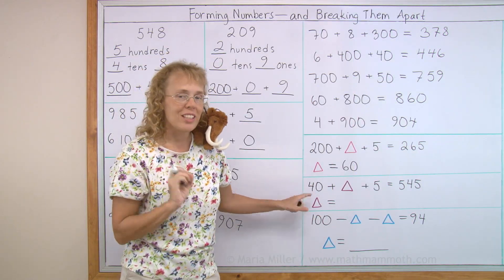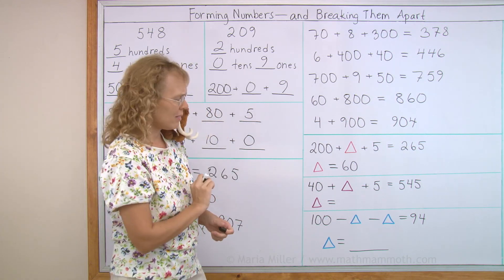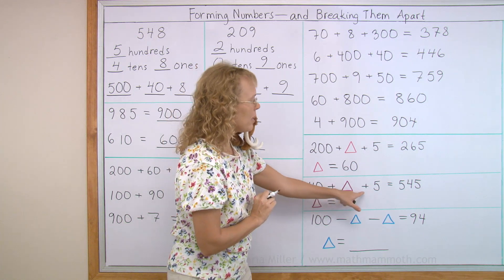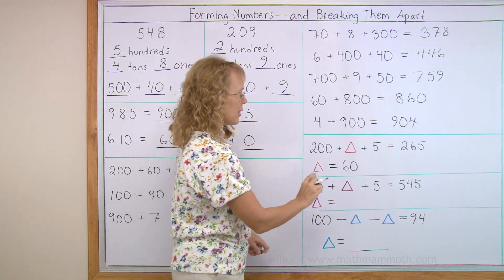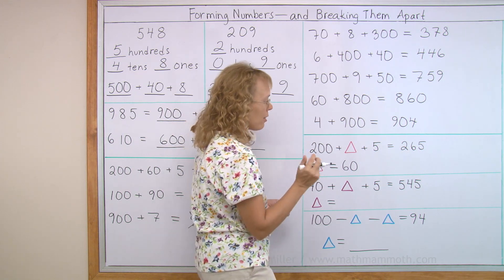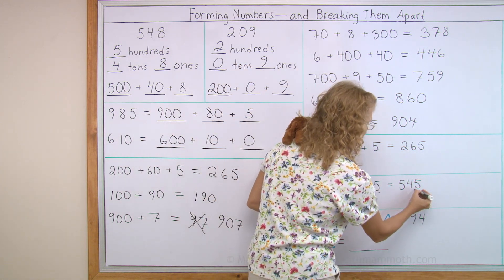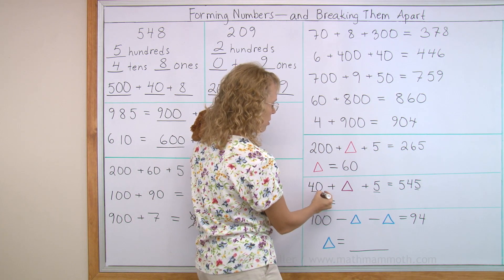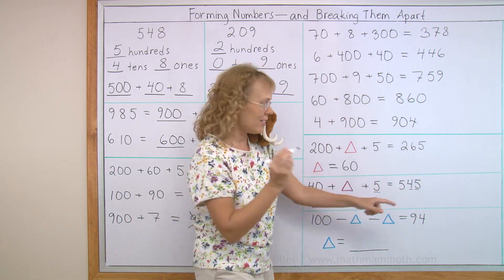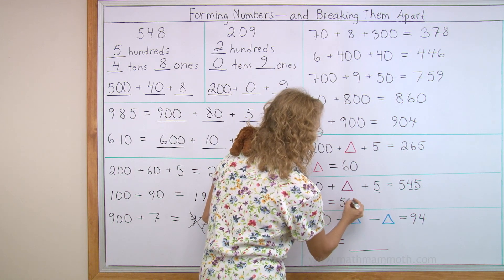Now that's a little bit trickier. Can you solve it? Forty plus something plus five makes five hundred forty-five. Okay. We compare the parts. Five and five are there, the five ones. Forty is over here. So what is missing is five hundred. The triangle is five hundred.